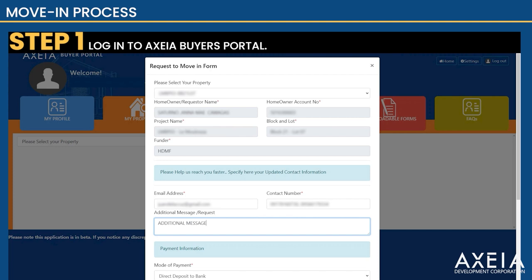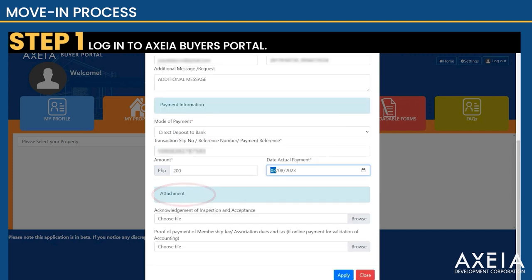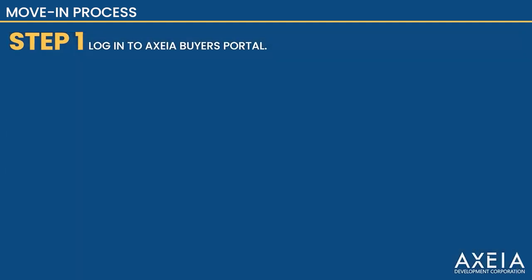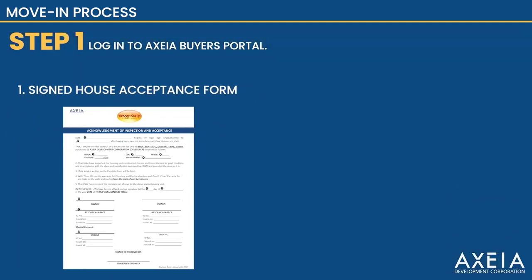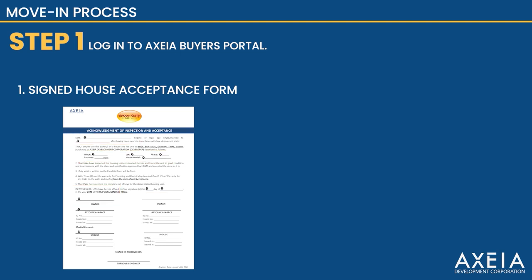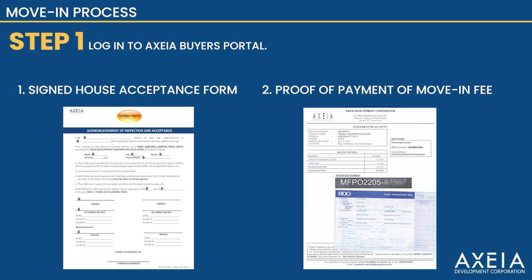Fill in the details. You also need to attach the following. First, the Signed Acknowledgement of Inspection and Acceptance, also known as the House Acceptance Form. This is the proof that you have inspected and accepted the unit. It must be properly filled out with your complete name and signature, block and lot, and the date you signed the document. Second, proof of payment of move-in fee and real property tax payment. Refer to the attached Statement of Account inside your move-in kit to know the exact amount of the move-in fee.